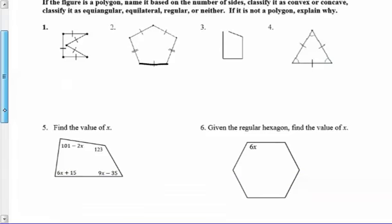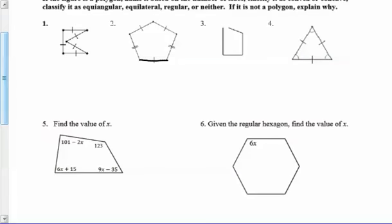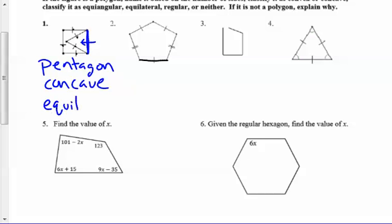So looking at this first polygon, it has one, two, three, four, five sides. So a five-sided figure is called a pentagon. And since this side kind of caves in, I can draw a diagonal that makes it concave. It's a concave pentagon. All the sides are marked congruent, so that makes it equilateral.